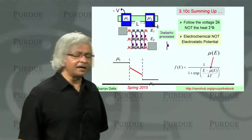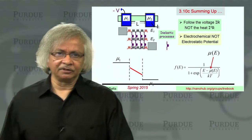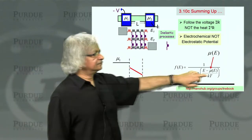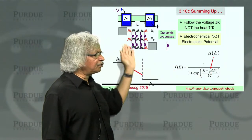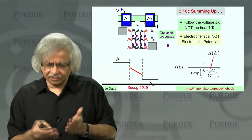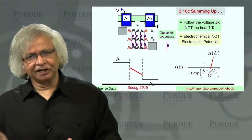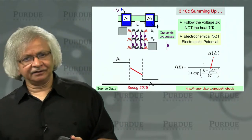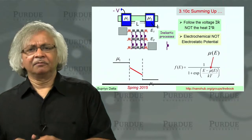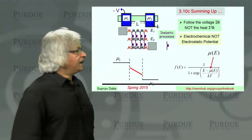So the point I'm trying to make is using this concept of this electrochemical potential, you can have a pictorial view of whether you expect, say, inelastic processes to make a difference or not, for example. And of course, you have to check against actual calculations and against experiment, but it gives you a way of thinking about things.